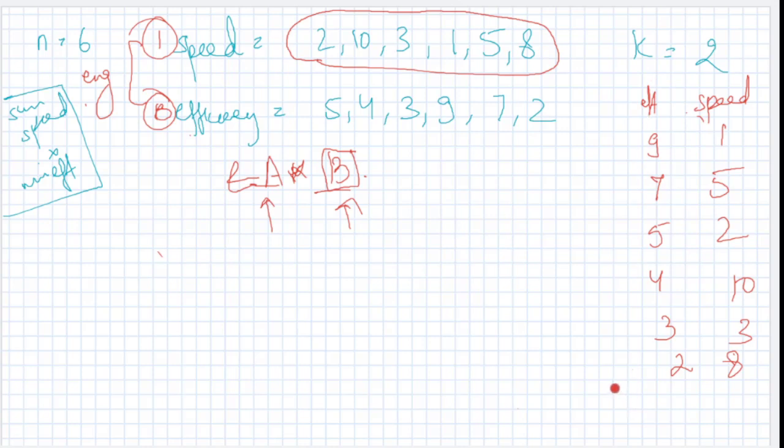We'll take a priority queue. You know one thing: when we store anything in a priority queue, whenever we pop the kth element, you'll get the highest values. That's what comes up. So we take a priority queue, add these speed values in it, and sum them.